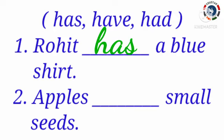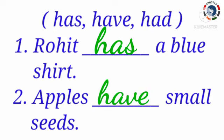Second one: Apples ___ small seeds. Children, here tell me what is the noun. Yes, apples. Whether this is a singular noun or plural noun? Very good — apples is a plural noun. So we have to use have, because when we mention about a plural noun, we use have in the present tense. Apples have small seeds.